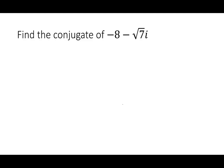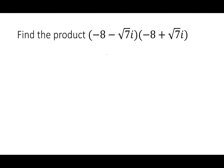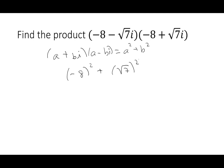There's a useful shortcut: a plus bi times a minus bi equals a squared plus b squared. For negative 8 minus square root of 7i, the conjugate is negative 8 plus square root of 7i. Using the shortcut, take negative 8 squared plus square root of 7 squared — no need to worry about the i or the middle sign. Negative 8 squared is 64, and square root of 7 squared is 7. Adding gives 71.